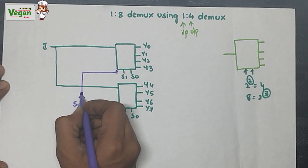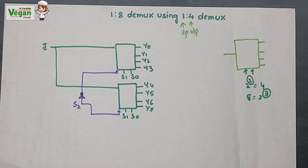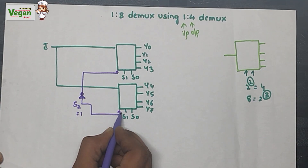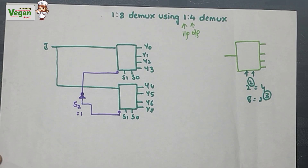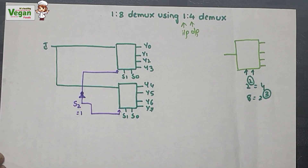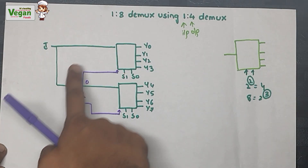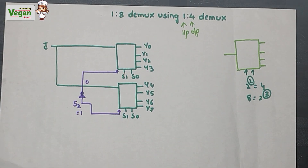S2 is given as input to the second 1-to-4 demux directly, and to the first 1-to-4 demux through a NOT gate. So if S2 = 1, then 1 goes to the second demux and its complement 0 goes to the first. If S2 = 0, then 0 goes to the second demux and its complement 1 goes to the first.